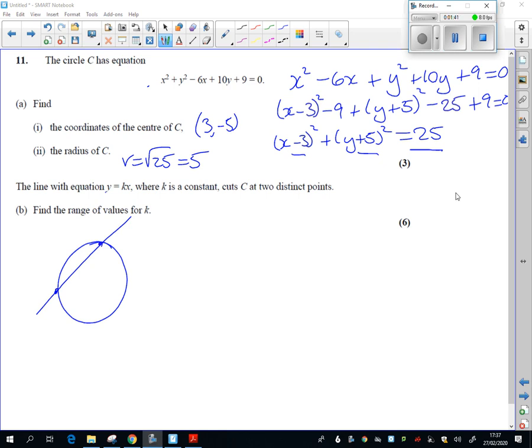Find the range of values for k. Any question that's talking about the number of intersections or the number of roots is going to be to do with discriminant. It has two distinct points. So when I try and solve these equations it has two solutions, so I'm going to be looking for the discriminant to be greater than zero. So what would you do if you were trying to find where a straight line and a circle cross? You'd substitute the straight line into the equation of the circle.